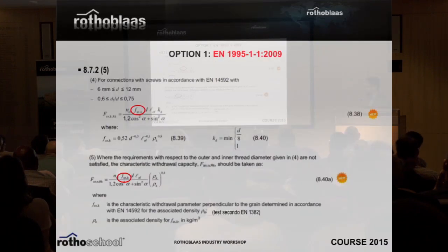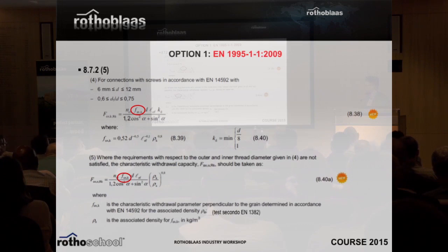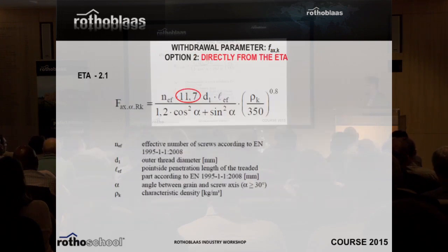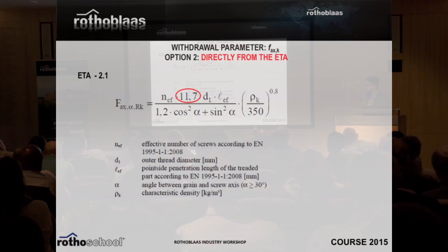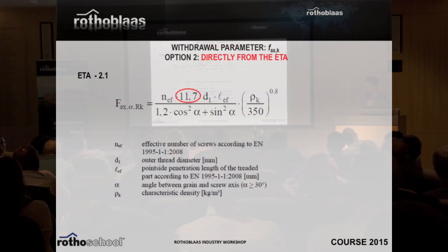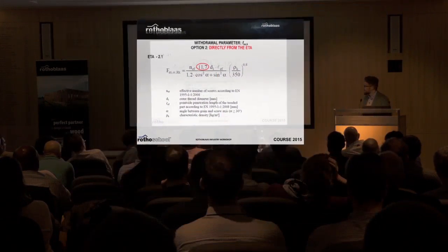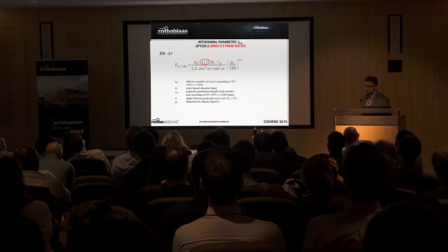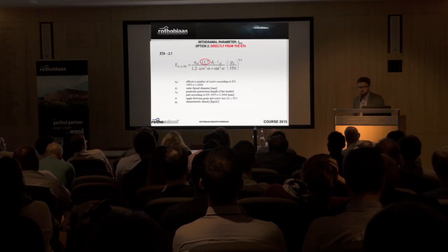Option 1: Eurocode. Option 2: ETA. The difference is that in the ETA you find exactly the resistance. The formula is related to the angle of the fiber. My suggestion again is to take the formula from the ETA of the producer. For example, the formula gives: effective number of screws (accounting for group effect — if you have 4 screws, effectively 3.5 are working), diameter, length of screw inside timber, and density. With this formula you can determine the withdrawal resistance.